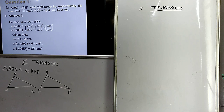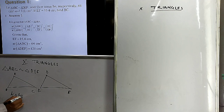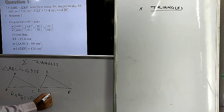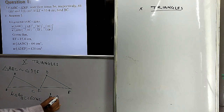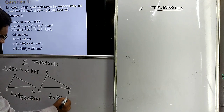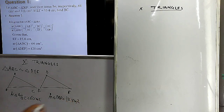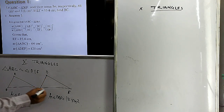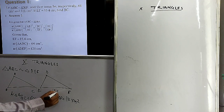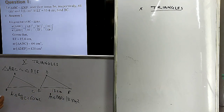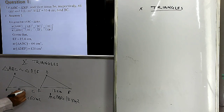Another thing given is the area of these two triangles. Area of triangle ABC is given, and area of triangle DEF is equal to 121 square centimeters. Another thing given is EF = 15.4 centimeters. And we want to find BC — how many centimeters is BC?